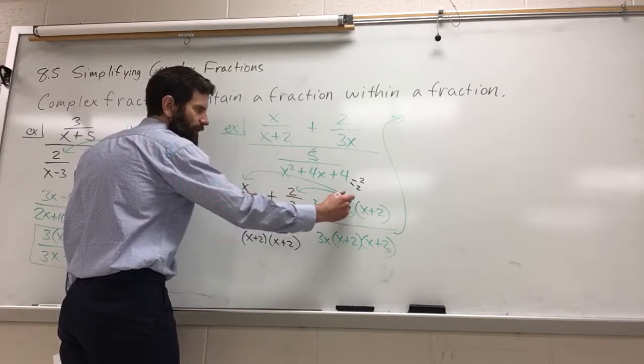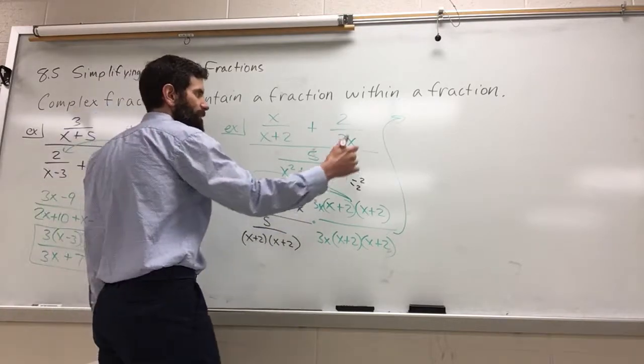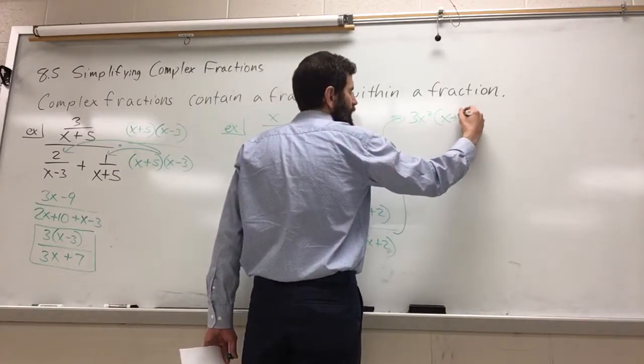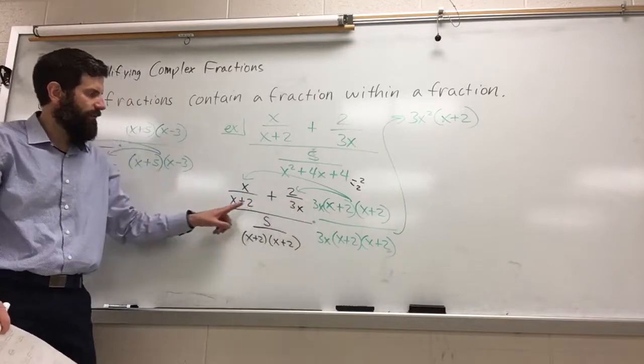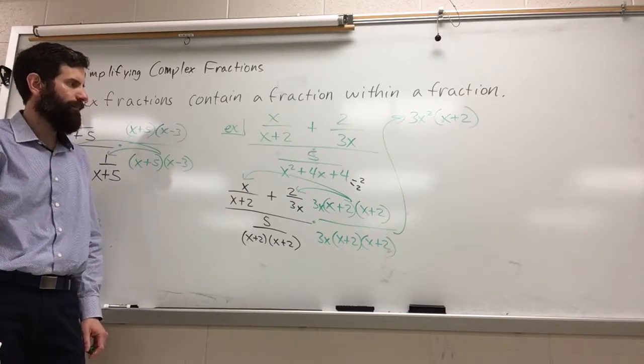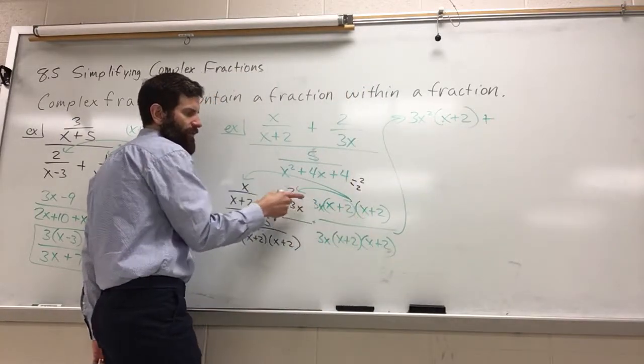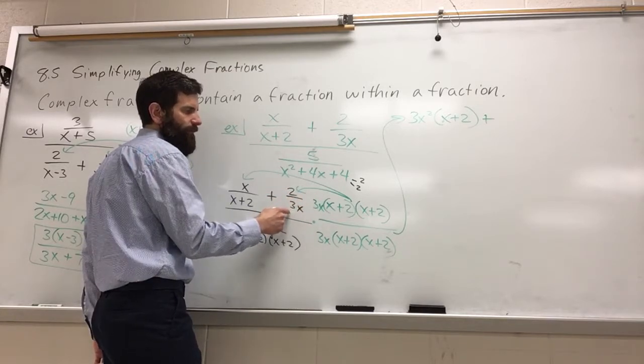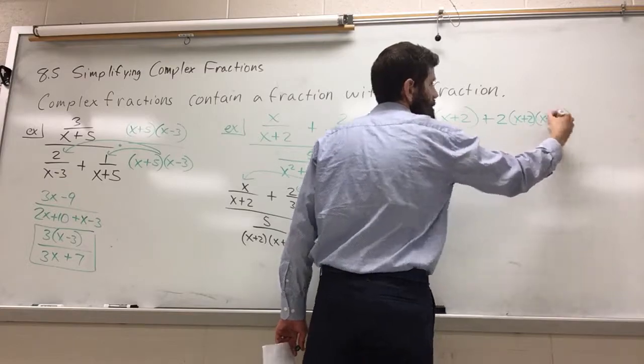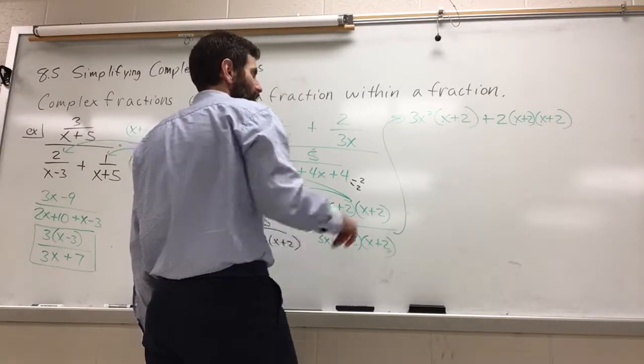x plus 2, we'll divide out this x plus 2. I'll have an x times a 3x, which I will go ahead and simplify. That's 3x squared. But then I have another x plus 2 to multiply. So again, x plus 2s divide out. We still have an x, a 3x, and an x plus 2. Plus, when this distributes, the 3x is the only thing that divides out. So I'm going to have 2 times x plus 2, x plus 2. So that's what's left in our numerator.